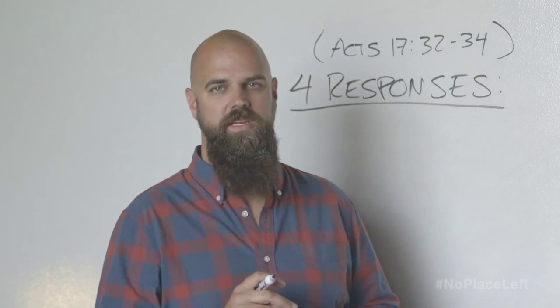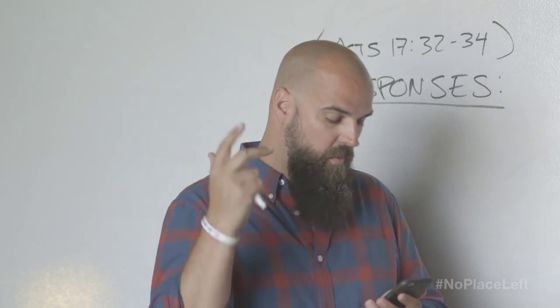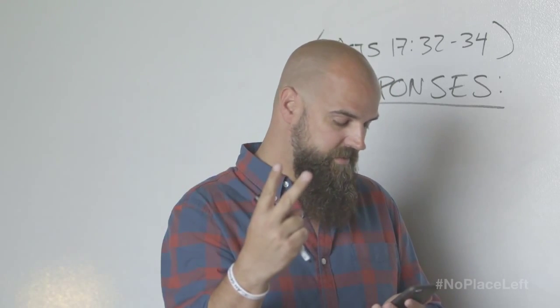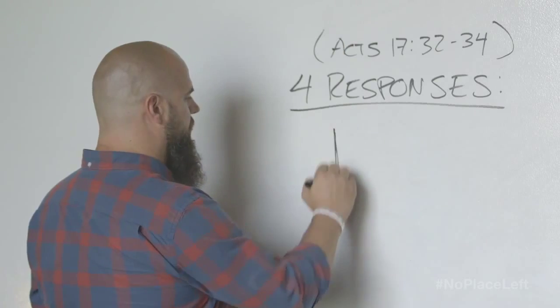As we go out and engage people far from God with the gospel, we're going to discover there are four different types of responses. Three of them we see in Acts 17 after Paul delivered his message at the Areopagus in Athens. Starting in verse 32, it says: 'Now when they heard of the resurrection of the dead, some mocked, but others said we will hear you again about this. So Paul went out from their midst, but some men joined him and believed.'